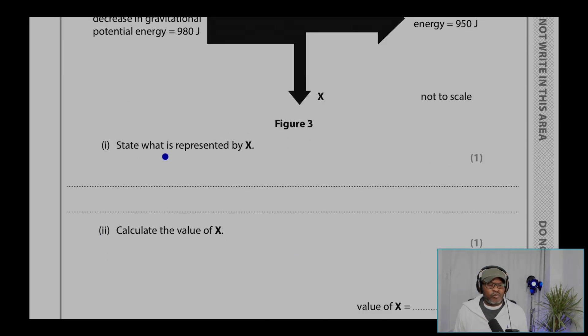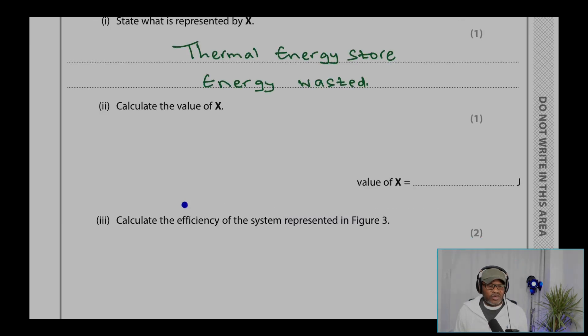2C point 1: State what is represented by X. X will be the thermal energy stored, which is the energy wasted. And we're to calculate value of X. That would be 980 minus 950 equals 30. So X will be 30 joules.